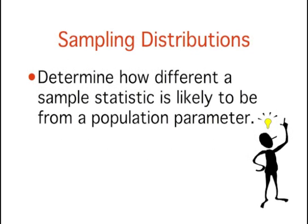Because inferential statistics concern generalizing from a sample to a population, it is critical to determine how far sample statistics vary from each other and from population parameters. These determinations are made based on sampling distributions.